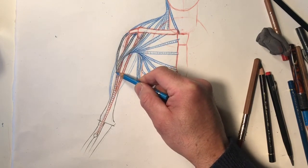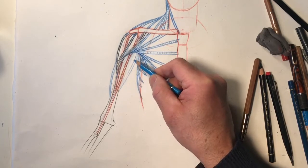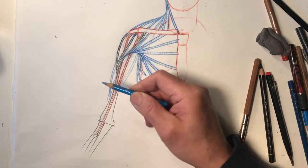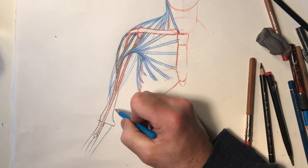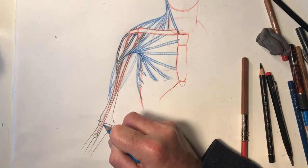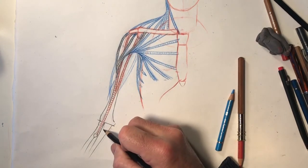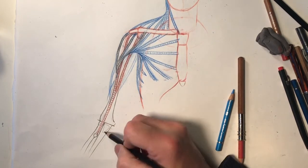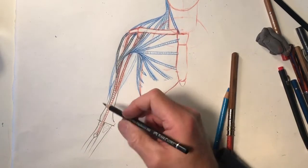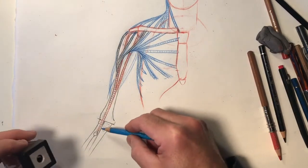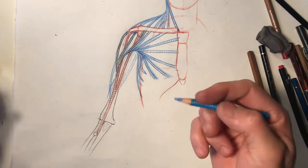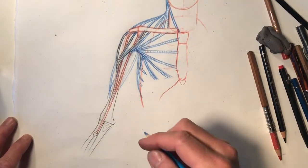So the brachialis starts from basically where the deltoid ends, where the coracobrachialis ends, and it goes from the anterior face of the lower half of the humerus. There's a triangular tuberosity, roughness in here on the anterior face of the ulna, and that's where this muscle goes. When there is roughness, bumps, crests, tuberosities, etc., it's because most likely a muscle will attach there.